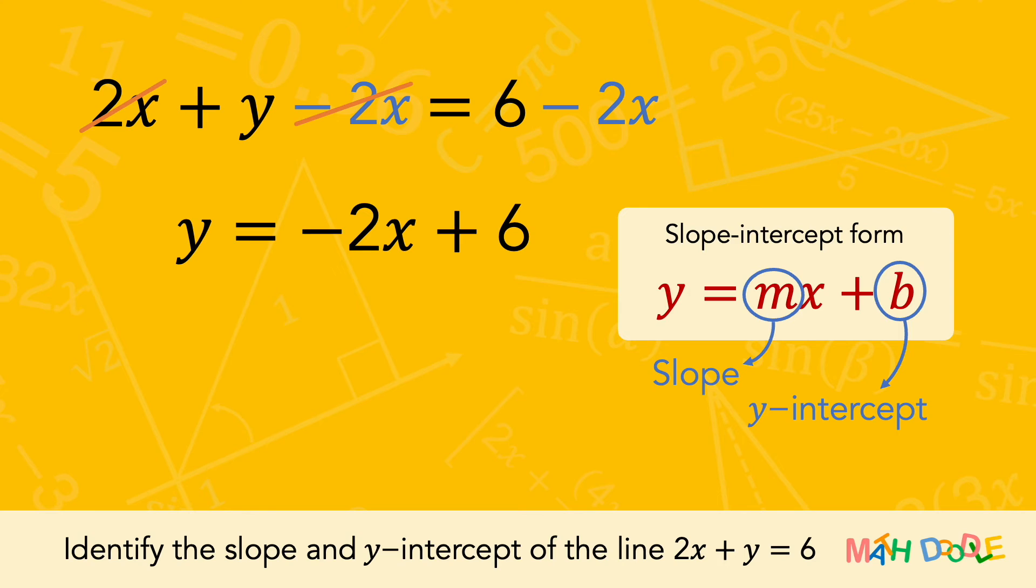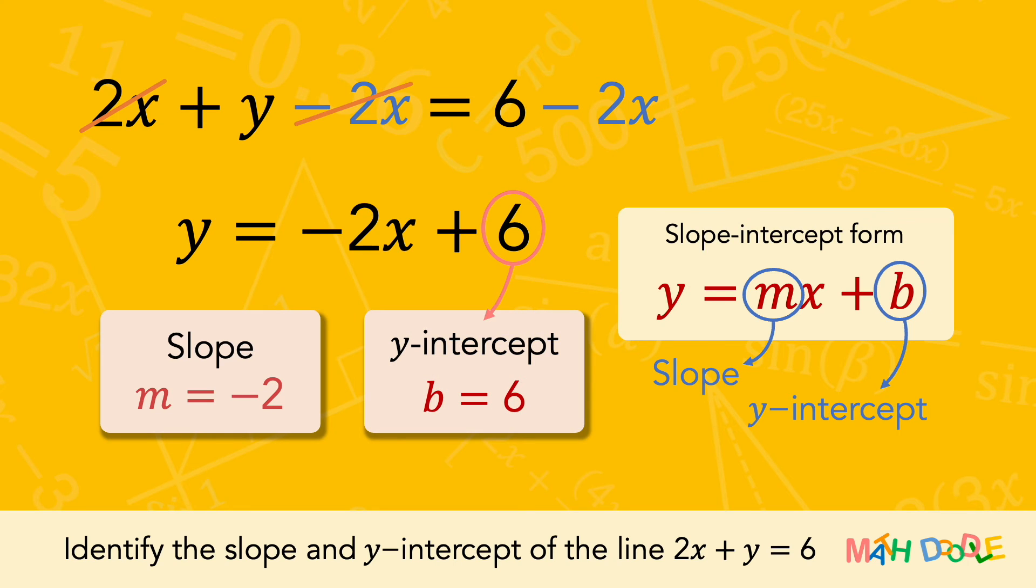So, by comparing this equation with the slope-intercept form, we can see that the equation has a slope of minus 2, and a y-intercept of 6. Also, we can write the y-intercept as an ordered pair.